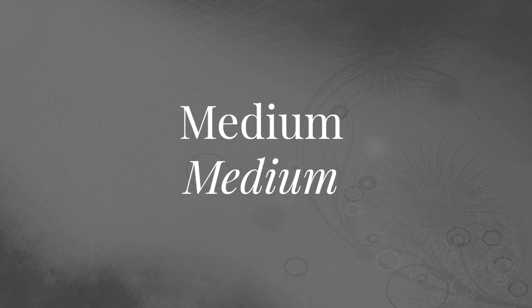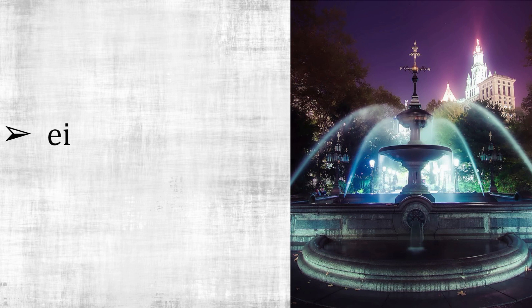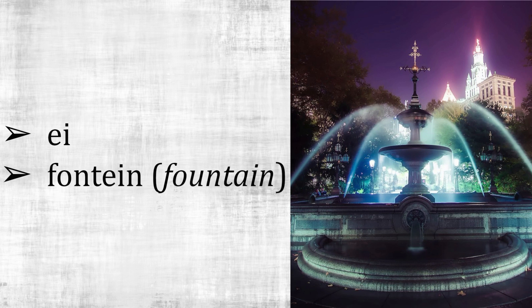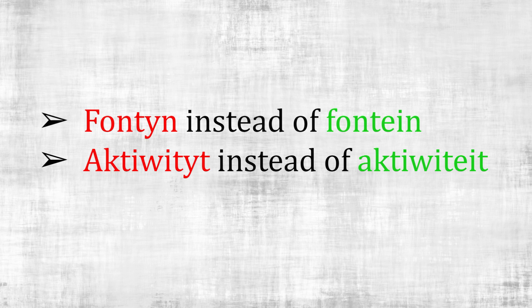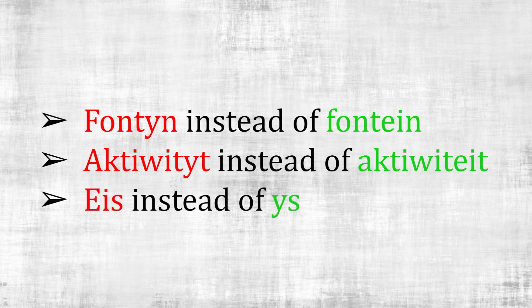Medium — and in English it's also medium. On a scale of difficulty, the following sounds should fall in the medium category. The sound 'ei', as in fontein. Now this sound can become quite confusing because it sounds exactly the same as the letter Y. So spelling mistakes like the following can happen quite easily: fontaine instead of fontein, activiteit instead of activiteit, eis instead of eis.